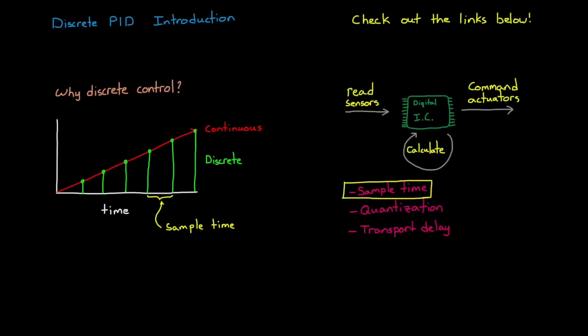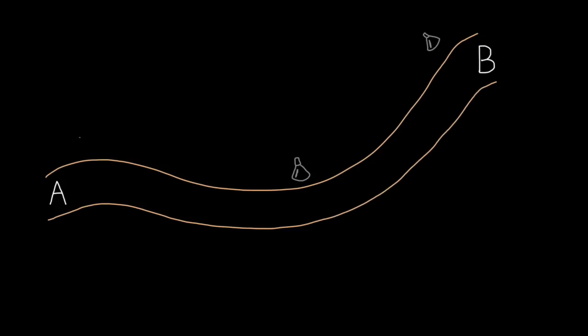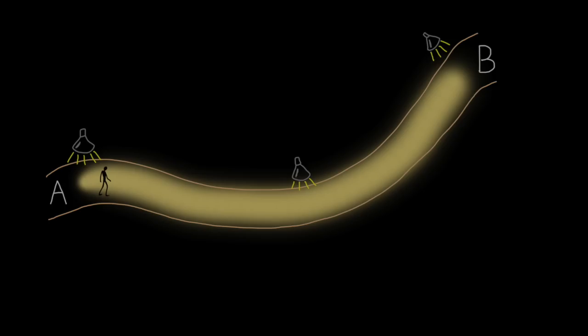If the sample time is short enough compared to the dynamics of your system, then it behaves very similarly to the continuous system. This is because the controller can read the sensors and update the actuators so fast that it appears practically continuous. However, as the sample time increases, the discrete result differs more and more from the continuous result. To understand why, let's imagine this scenario. You want to walk from point A to point B, and to do so you have to walk through a winding hallway. If the lights are on and your eyes are open, then this is analogous to the continuous time domain. You can see everything as it happens and constantly adjust your path. In fact, you could probably even run through the hallway.